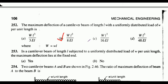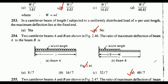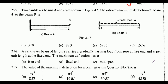In a cantilever beam of length l subjected to a uniformly distributed load of w per unit length, the maximum deflection lies at the fixed end — options are yes or no. The correct answer is option B: No. Next, two cantilever beams A and B as shown in figure: the ratio of maximum deflection of beam A to beam B. The correct answer is option D: 48/7.